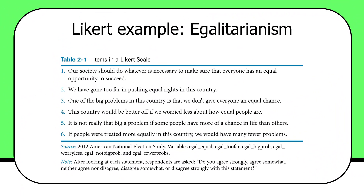Look at the bottom here. Respondents are asked, after looking at each statement, do you agree strongly, agree somewhat, neither agree nor disagree, disagree somewhat, or disagree strongly with a statement. So you can see it's like a five-item ordinal measure of degrees of disagreement, coded from one to five. These are ordinal values.